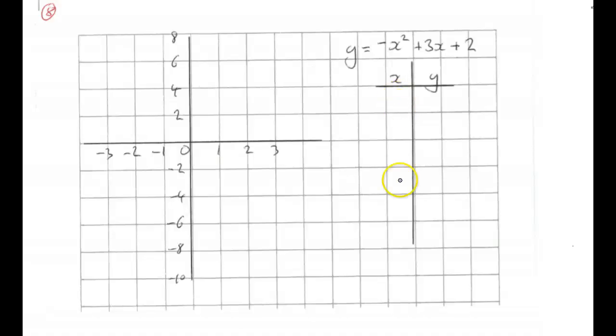So we're not going to start with negatives, we'll start with 0, 1, 2, 3. For x equals 0, that would be negative 0, nothing, plus nothing, plus 2 is 2, so 0 would be 2.